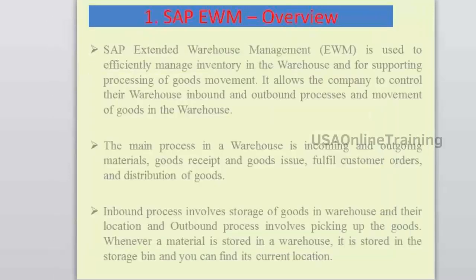The basic functionalities of any warehouse are: incoming of products and outgoing of products. Whenever you order material from a vendor, they send it to your plant. If it is not WM-managed, you keep it somewhere in a storage location. The key functions of WM are managing incoming materials and outgoing materials — how you keep materials in the warehouse and how you deliver to the customer.